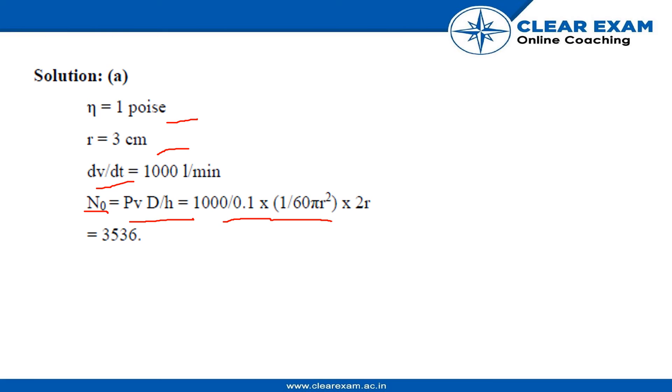So here, π R square is the area of the pipe, the circular area.